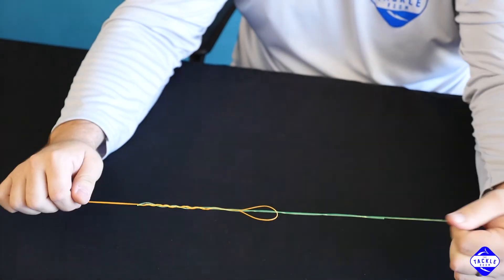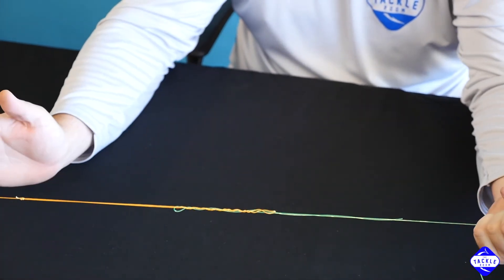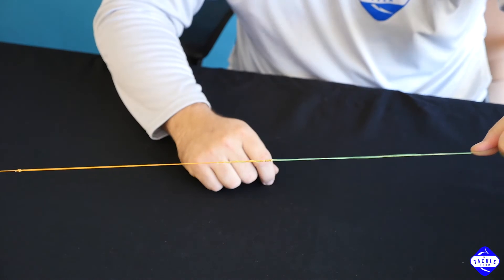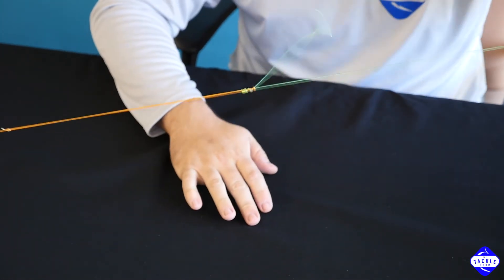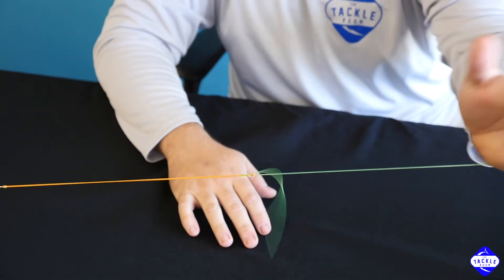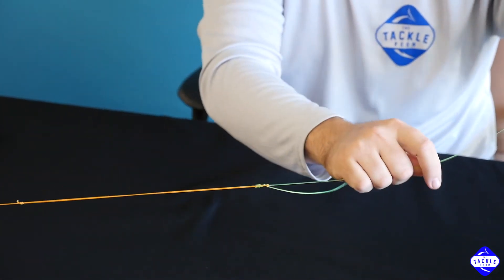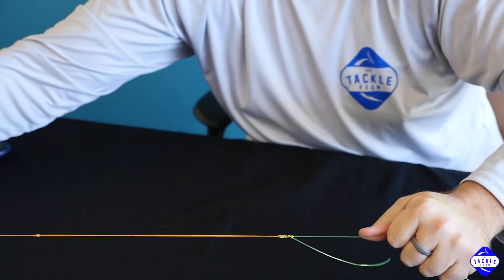At this point you can totally let go of everything and just pull your main line. Now this is going to be a little tight so you're going to need to take a wrap on it with your hand and give it a good tug.